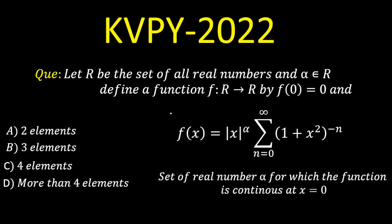Today we are going to discuss a question on continuity. Let R be the set of all real numbers and alpha belongs to the real numbers. We have to define a function whose domain is R and codomain is R, and the function value at 0 is given as 0. We have to find the values of alpha for which the function becomes continuous at x equal to 0 — specifically, how many such alphas exist.